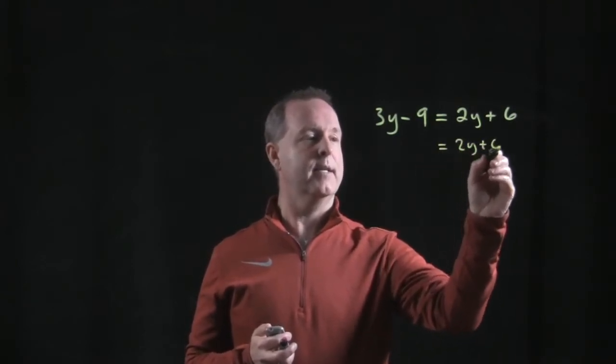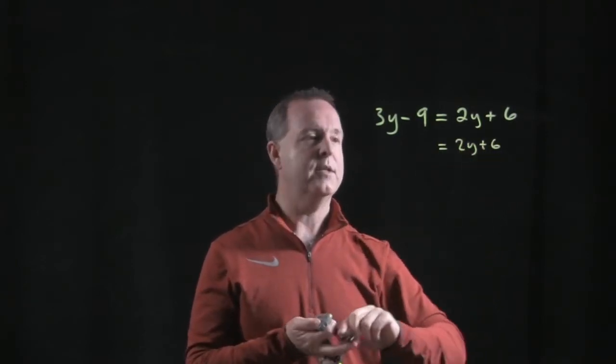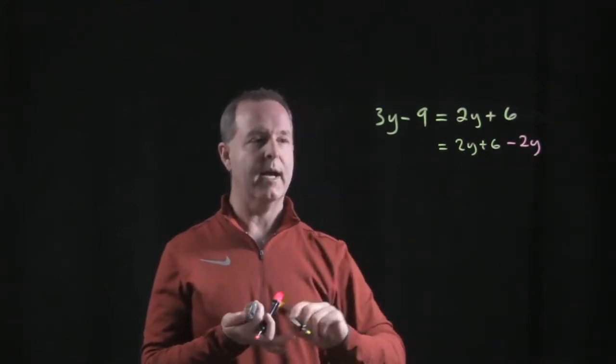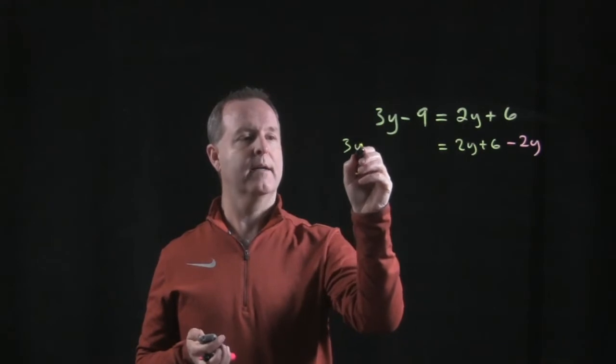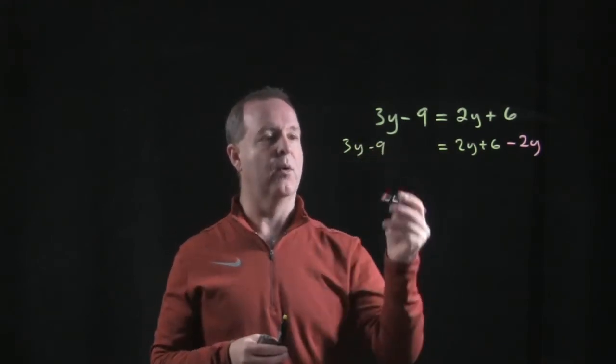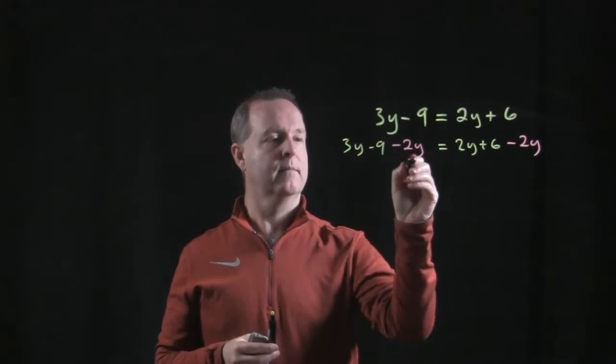So I'm going to subtract 2y from both sides. On the left, 3y minus 9 take away 2y. On the right, 2y plus 6 also take away 2y. Notice the equation remains balanced—that's key.